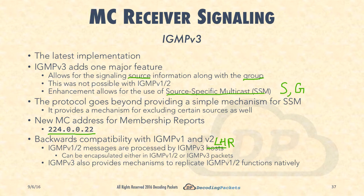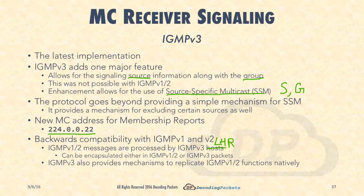Those membership reports and leave messages coming from hosts can be encapsulated either natively in version 1 and version 2 packets, or alternatively encapsulated in version 3 packets. As long as the type remains the same, they would still be processed by version 3 routers. Finally, IGMP version 3 also provides join group and leave group mechanisms natively - everything version 1 and version 2 were doing. You do not have to rely on version 1 and version 2 message types; you can use pure version 3 to replicate all of those functions.